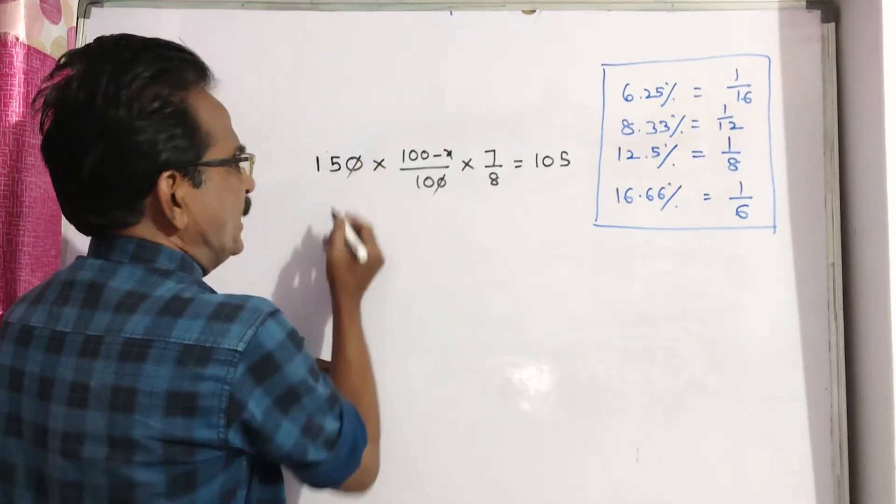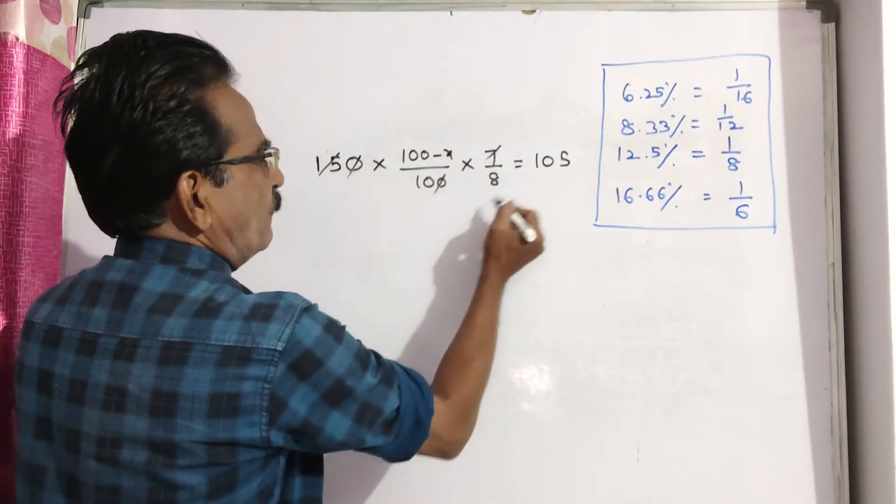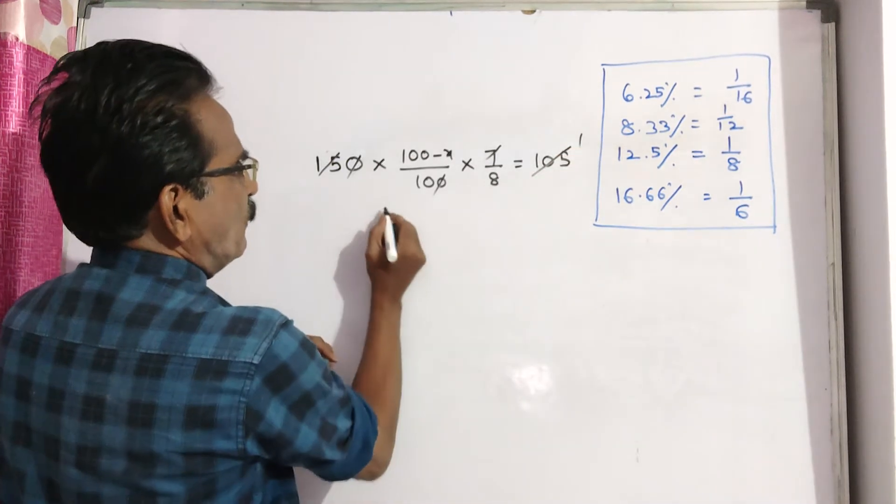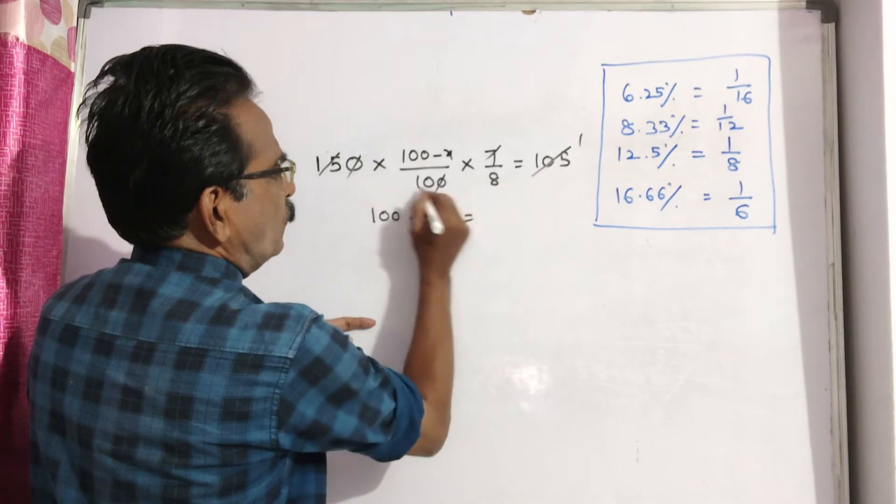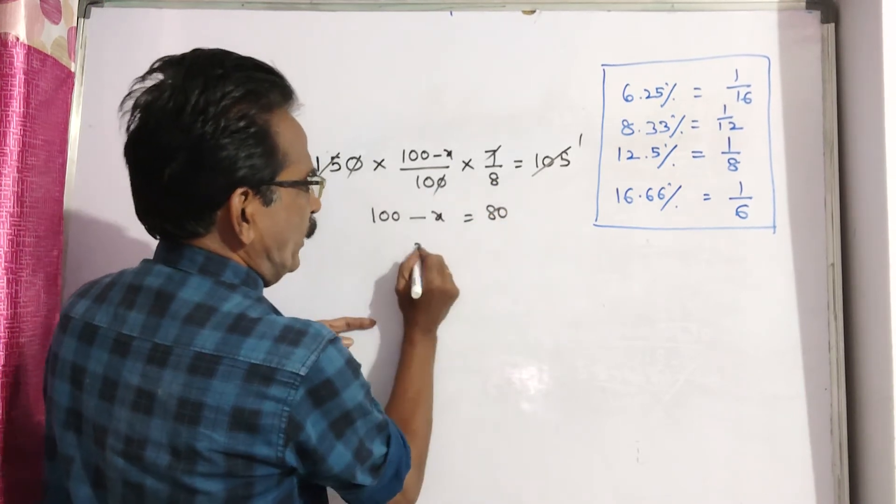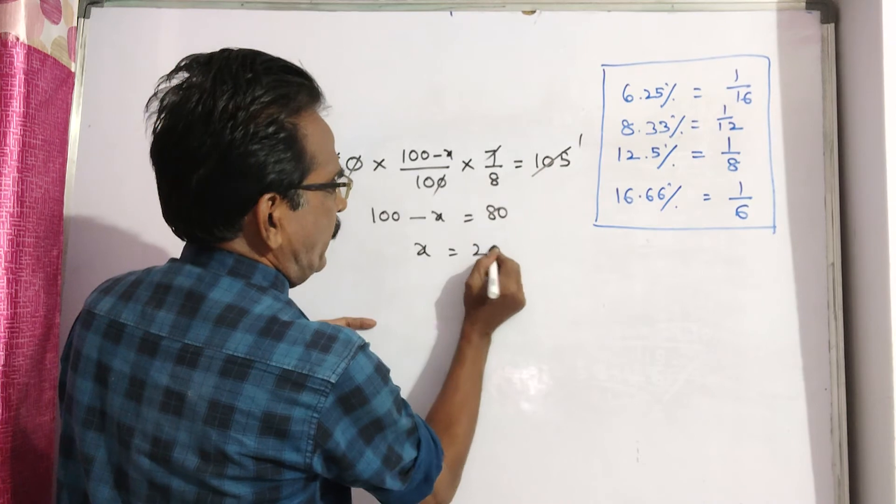0, 0 gets cancelled. 15 sevens, 105. 105 ones, 105. So 100 minus X is equal to 8 times 80. X is equal to 20%. X is equal to 100 minus.